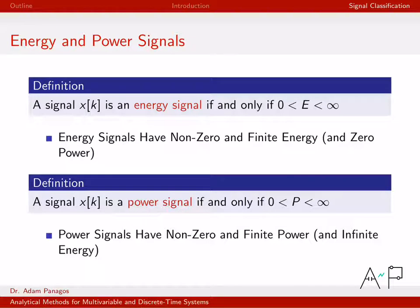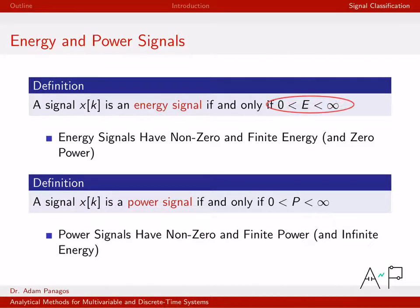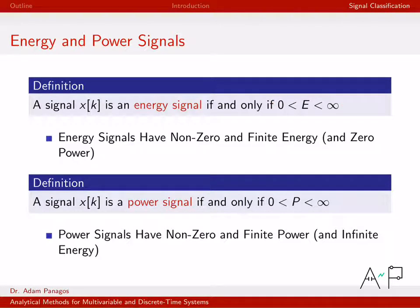First, let's talk about an energy signal. A discrete time signal x[k] is an energy signal if and only if its energy E is greater than zero and less than infinity. If you compute this quantity E and it falls between these bounds — so E is just a scalar number — then we say that x[k] is an energy signal. In other words, energy signals have non-zero and finite energy.